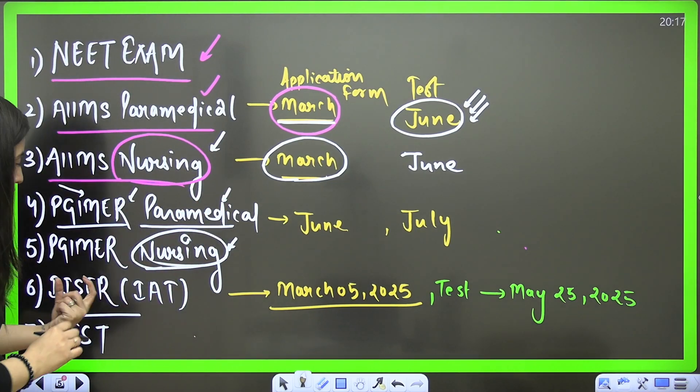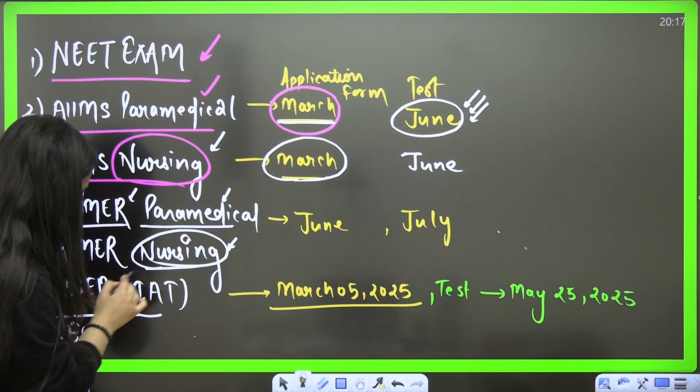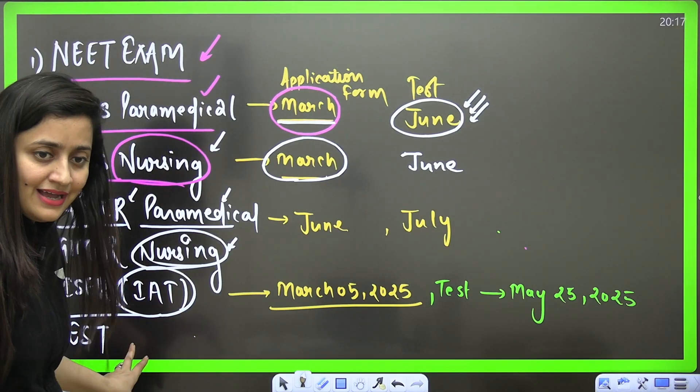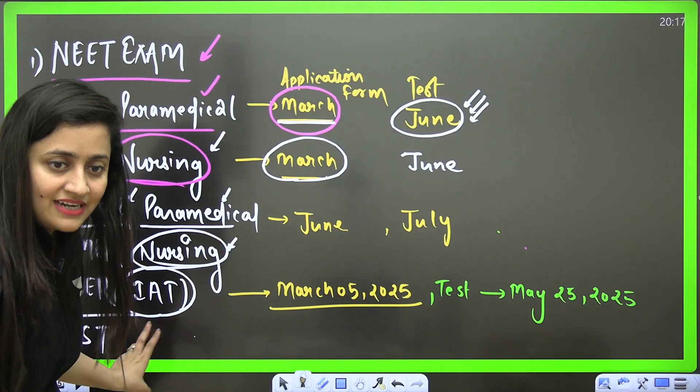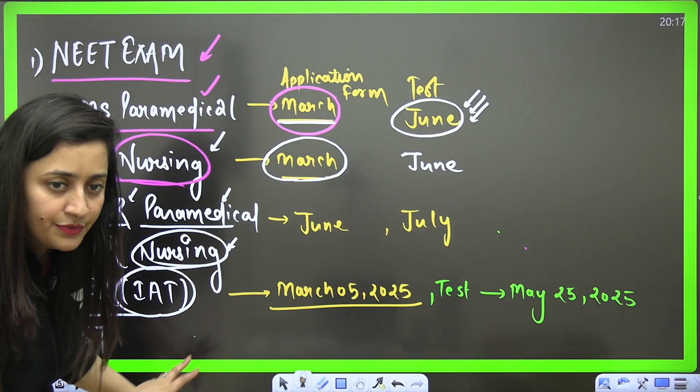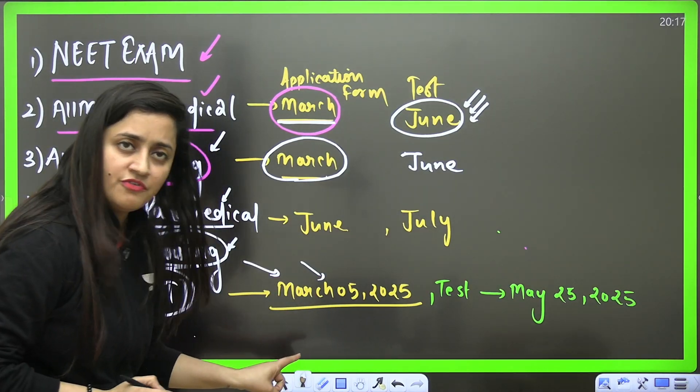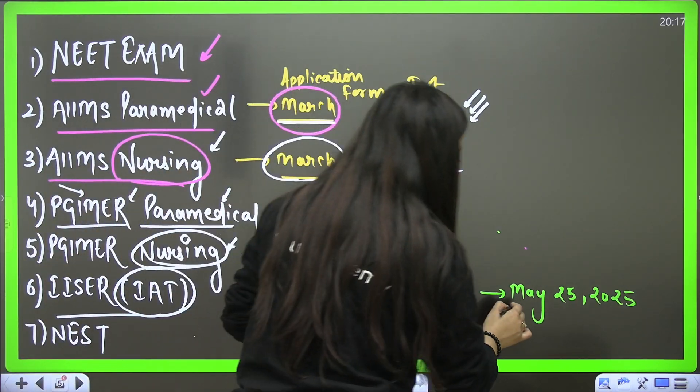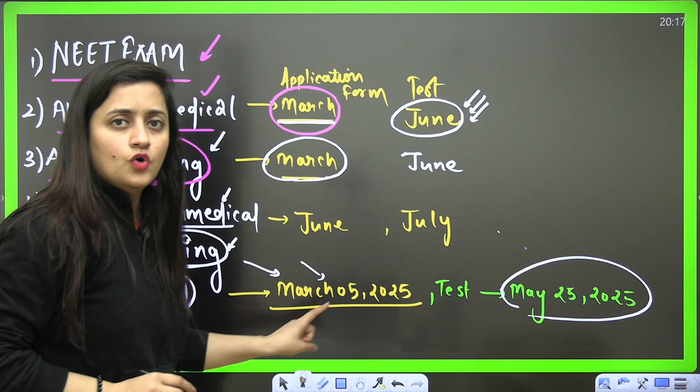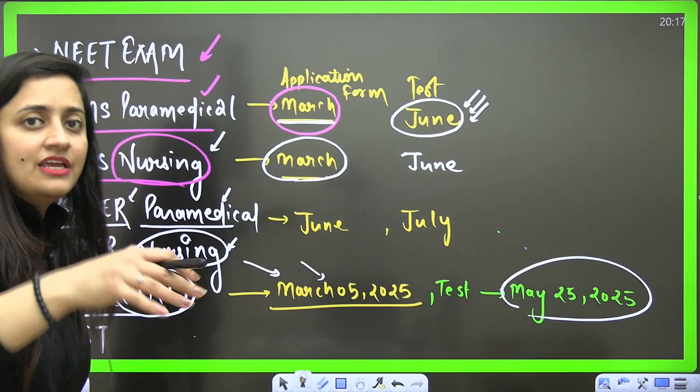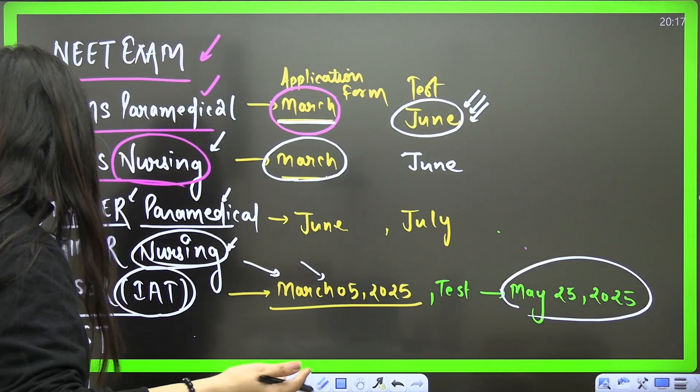So if you want to go for research, this is the entrance exam that you have to give - that is IAT, IISER Aptitude Test. So these dates are confirmed. On March 5th, 2025, the application forms will be out and your exam will be on May 25th. So if you want to go for the BS-MS degree, you have interest in research, you can go for this.